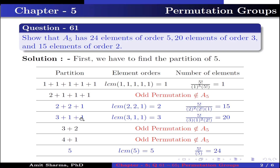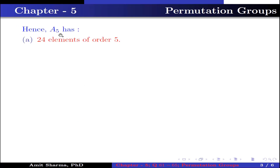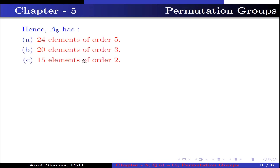The partition 3+1+1, whose LCM is 3, gives elements of order 3. The 1-cycle is presented 2 times into 2!, which equals 20, so the number of elements of order 3 is 20. The partition 5, whose LCM is 5, gives elements of order 5. The number of elements of order 5 is 5! divided by 5, because the 5-cycle is presented 1 time, which equals 24. Hence A5 has 24 elements of order 5, 20 elements of order 3, and 15 elements of order 2.